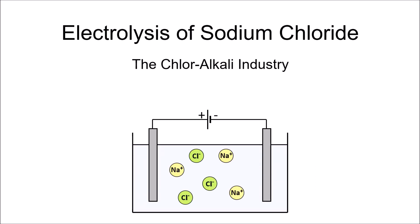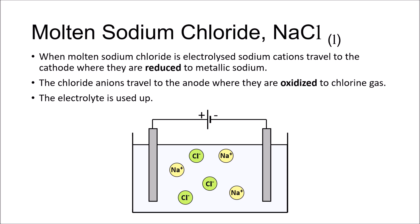There are two ways of doing this. We can use molten sodium chloride, the advantage being that we can obtain metallic sodium. However, the process is very expensive as it requires temperatures above 801 degrees C, which is the melting point of sodium chloride.